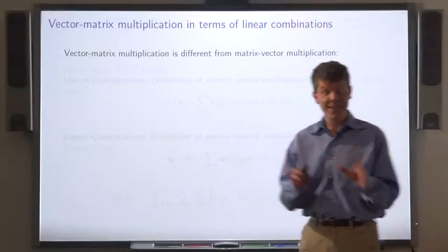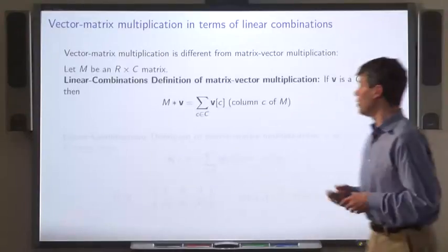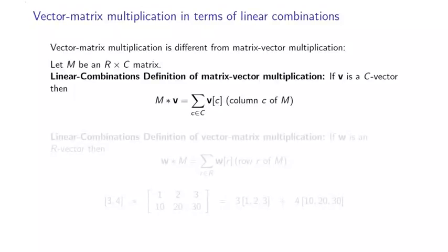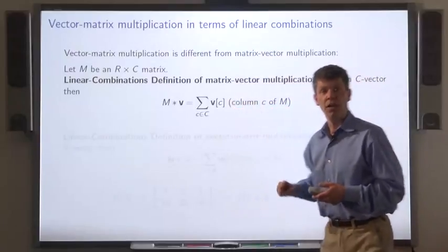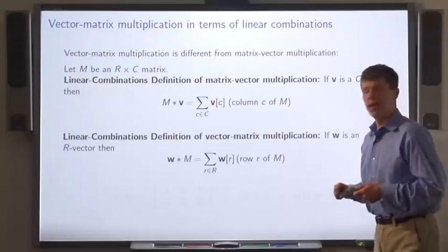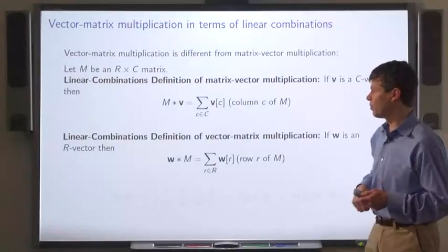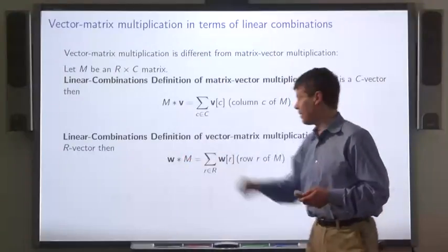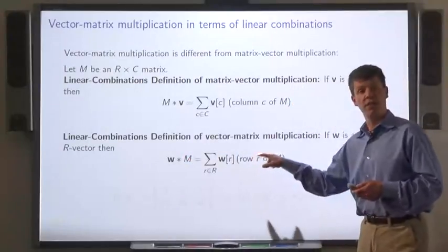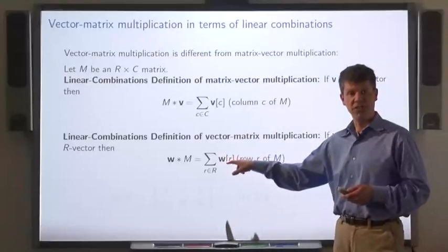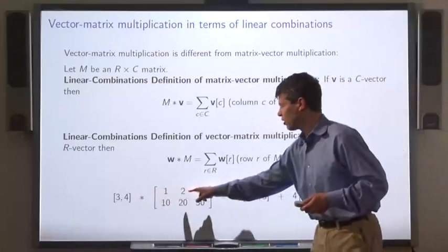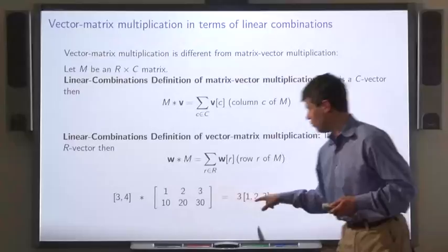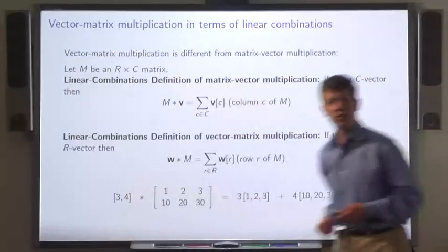Vector-matrix multiplication is different from matrix-vector multiplication. For matrix-vector multiplication, it's the linear combination of the columns of the matrix with coefficients given by the entries of the vector. For vector-matrix multiplication, to multiply a vector w times M, you take the linear combination of the rows of matrix M with coefficients given by the entries of the vector. For example, multiplying this vector by this matrix, we take the linear combination of the two rows with coefficients equal to the entries in the vector.